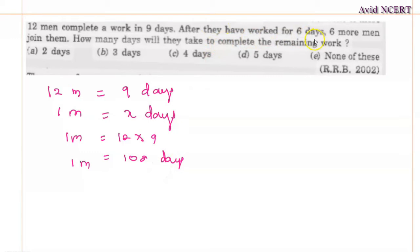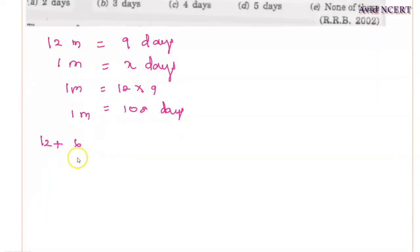After they have worked for 6 days, 6 more men join them. So 12 men plus 6 men, which means 18 men are working now.